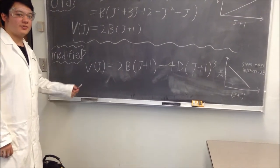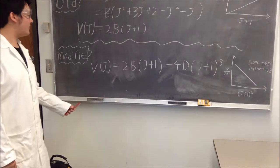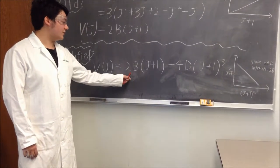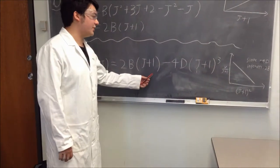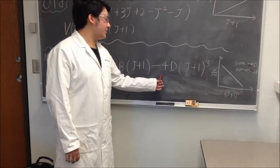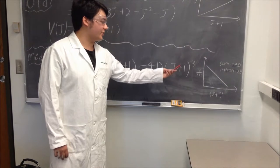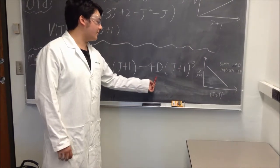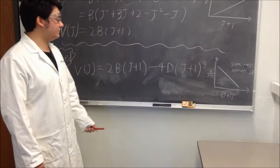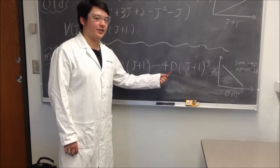This transitional frequency equation is not perfect. We have the original equation with frequency equaling 2B multiplied by J plus 1. We have to add a correction term, which is negative 4 multiplied by D multiplied by J plus 1 cubed. This D term is the centrifugal distortion constant. It's an independent variable which depends on the bond identity.